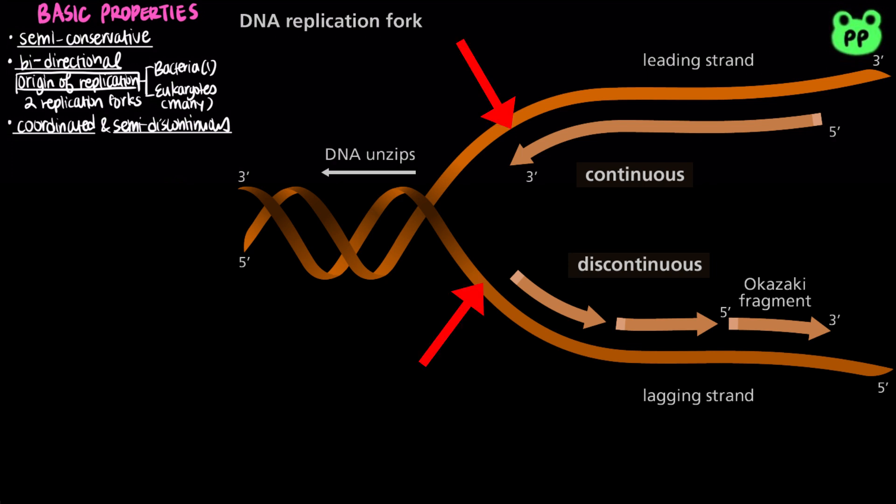The two parental strands at the replication fork are synthesized coordinately at similar rates. However, they are anti-parallel, running in opposite directions. Along one strand called the leading strand which unwinds from 3' to 5' towards the replication fork, DNA polymerase synthesizes DNA continuously from 5' to 3' end.